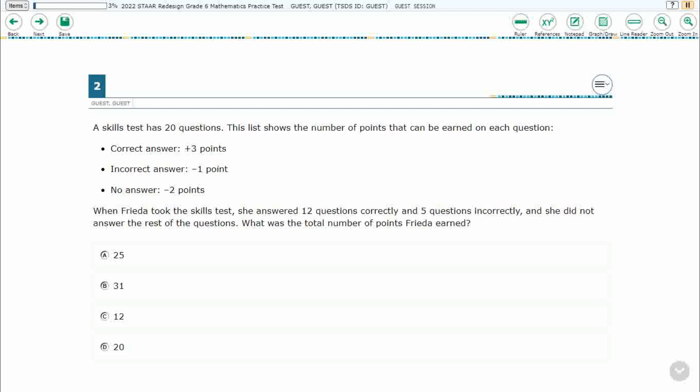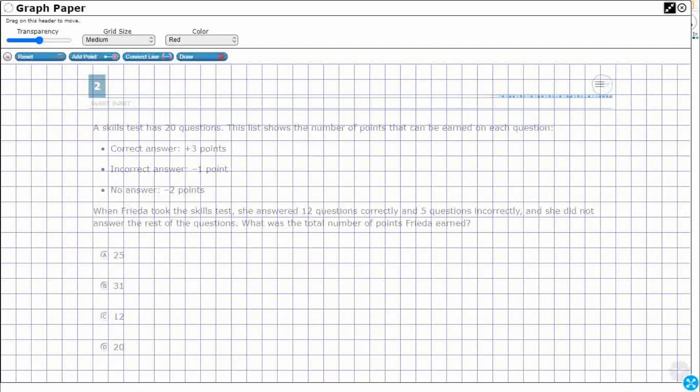So we have a skills test, 20 questions. Look at this - correct answer is three points, incorrect answer is negative one, but no answer is negative two. It's actually better to get an incorrect answer than to leave something blank. So Freda took the skills test. She answered 12 correct, 5 incorrect. She did not answer the rest of the questions. Let's figure this out here.